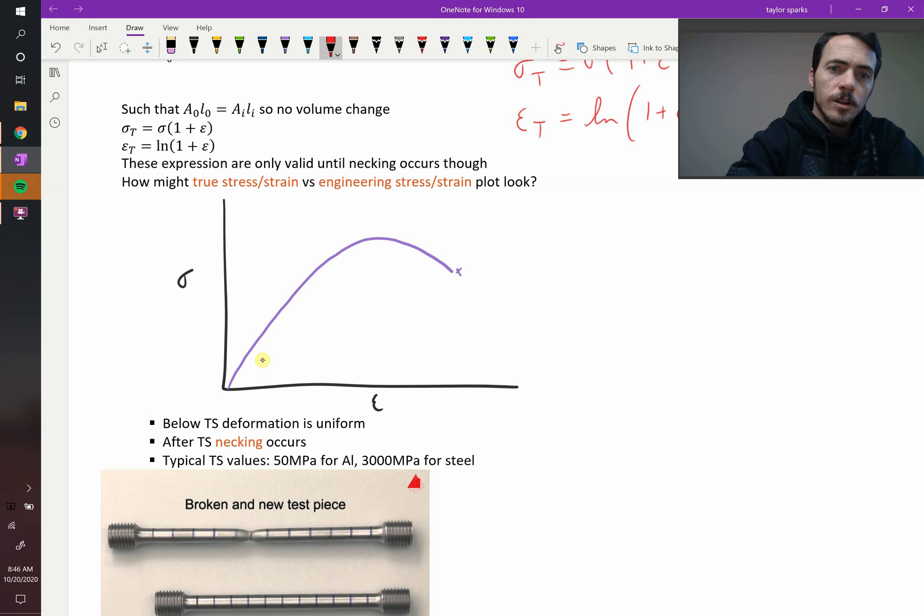So true stress and strain would keep on going up until it broke. It would keep on going up because you're taking into account instantaneous area to get your true stress, as opposed to your engineering stress, sometimes sigma e.